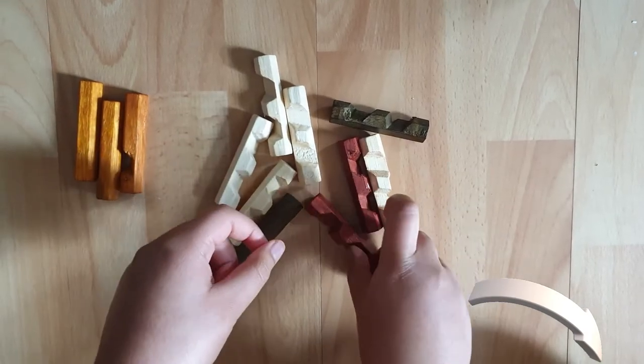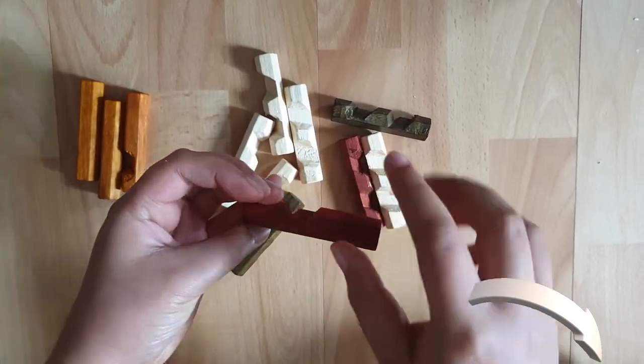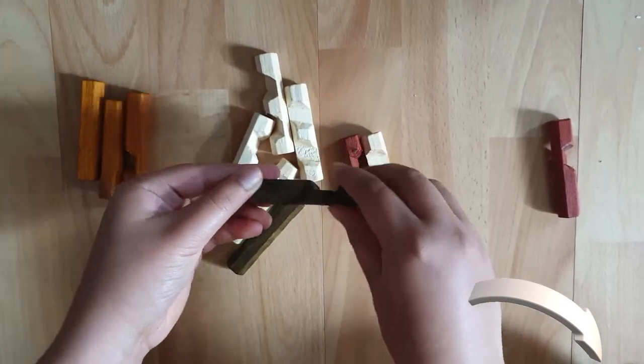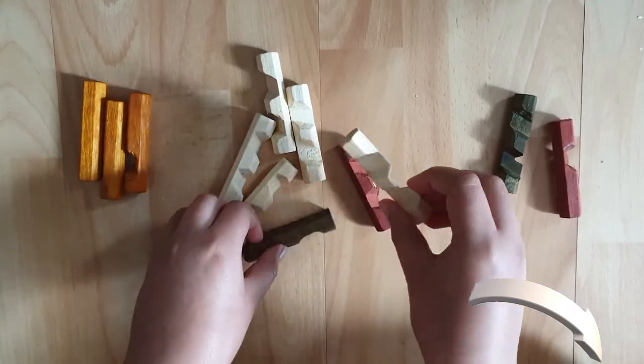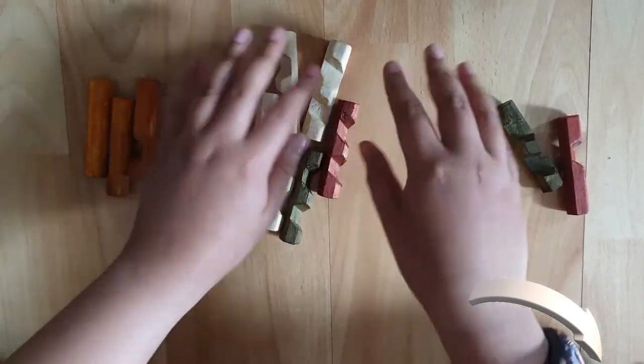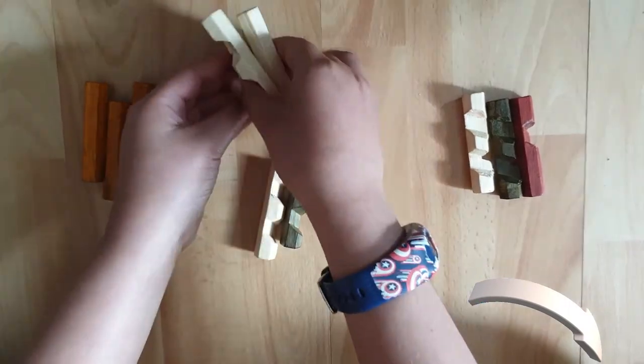Then pick out the ones with three holes in them, so one, two, three holes. So there's one and one, two, three holes, and one, two, three holes. Okay, and with the other six that are remaining, you can just split them into two groups with three in each.